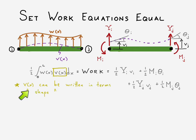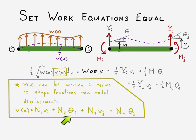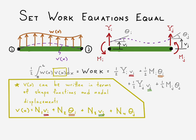The important thing to note is that our displacement equation v(x) can actually be written in terms of our shape functions and nodal degrees of freedom — nodal displacement at the left side, nodal rotation at the left side, nodal displacement at the right side, and nodal rotation at the right side. Making this substitution allows us to compare different aspects of the equation: each shape function corresponds with a specific portion of the work equation for the finite element beam element — for displacement at node i, rotation theta i, displacement at node j, and rotation at node j.